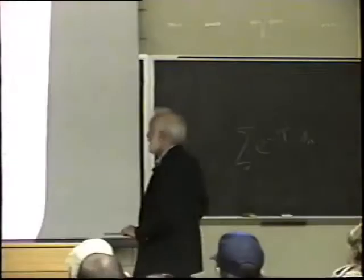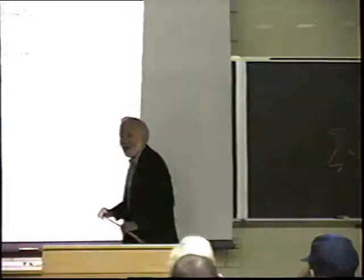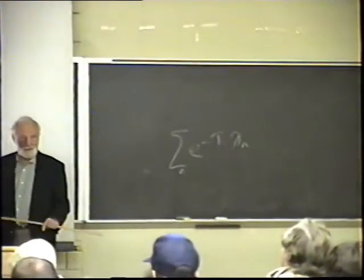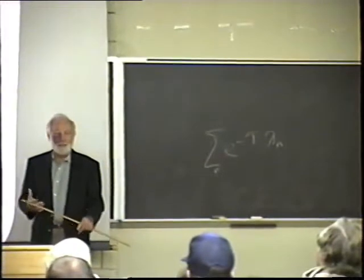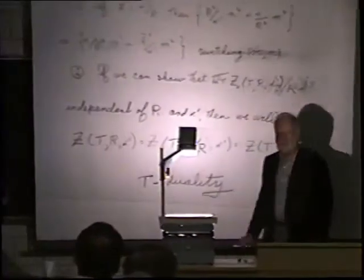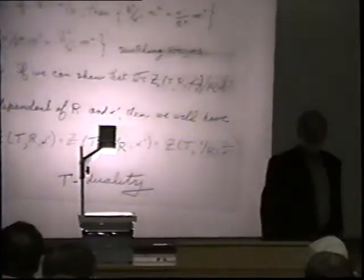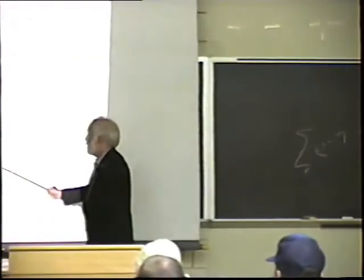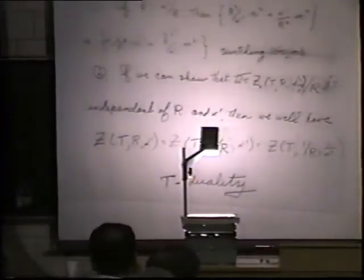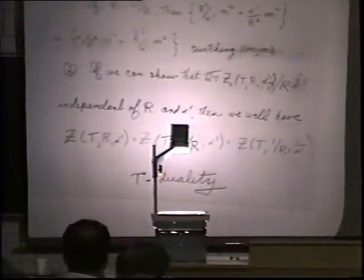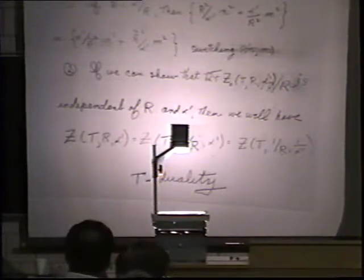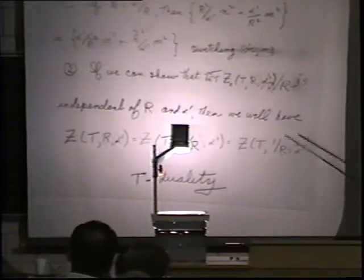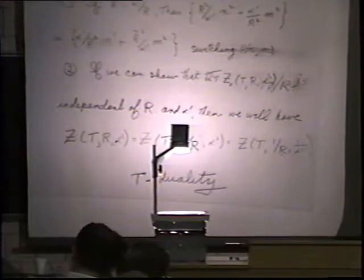If we can show that the Z_0 term is independent of r and α', then we will see that the partition function based on r and α' is the same as the partition function where the target radius is α'/r. This is the same as changing the coupling constant to 1/α'. That's what T-duality means in this baby example — that you get the same partition function when the target circle has radius r versus α'/r.